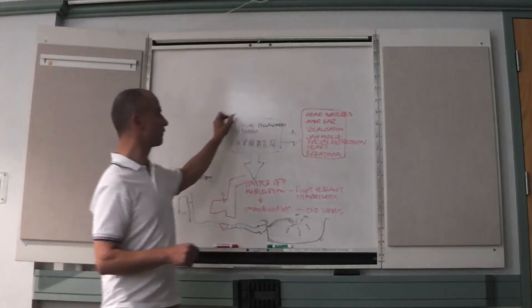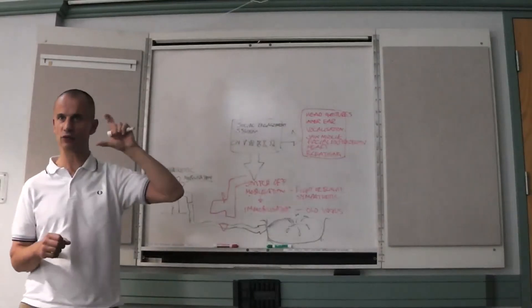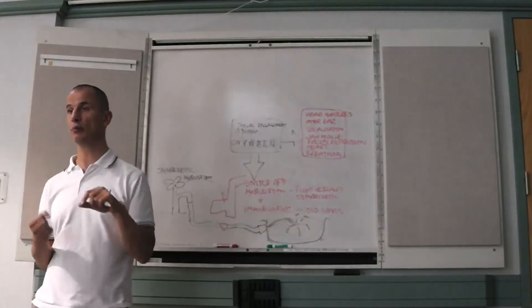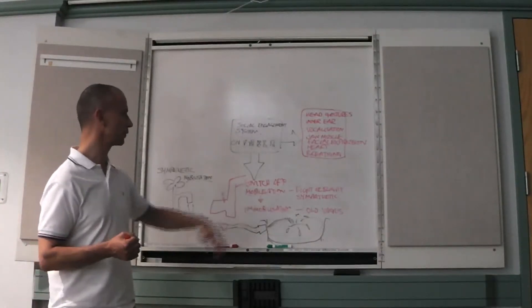But this stuff. Being socially engaged is the best way of, that ventral vagal complex is the best way of helping, of being human, actually. It switches off all this difficult stuff.